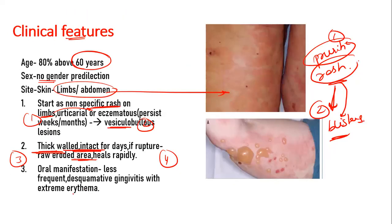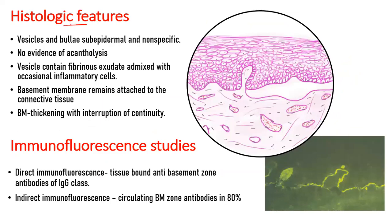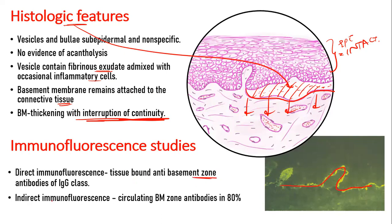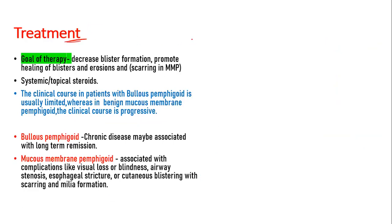Once ruptured, blisters leave a raw eroded area which heals rapidly. Oral manifestation includes erythema and desquamative gingivitis. Histologically, the vesicle formation is subepithelial, the epithelium appears intact, and the vesicle contains fibrinous exudate with multiple inflammatory cells. The basement membrane appears connected to the connective tissue, with thickening and interruption of continuity. Immunofluorescence shows a linear band of fluorescence in the basement membrane zone.